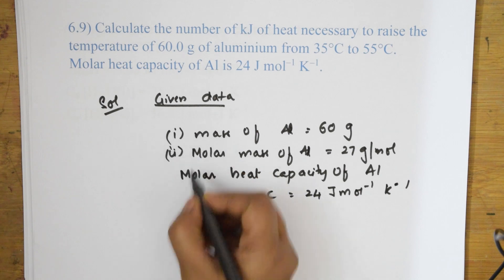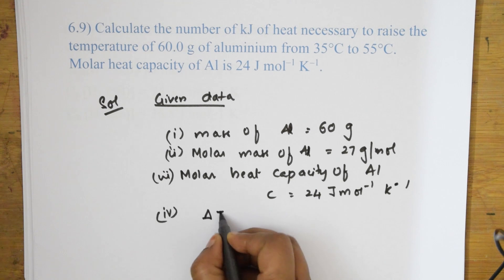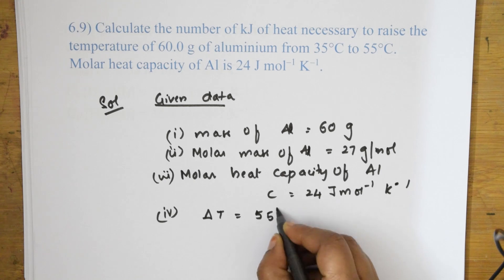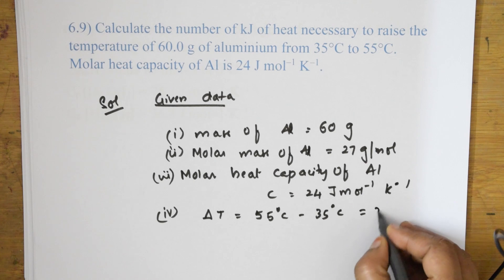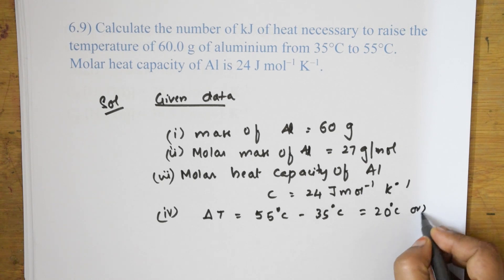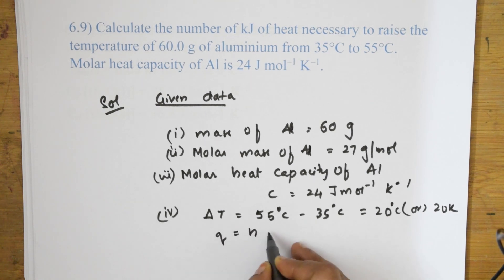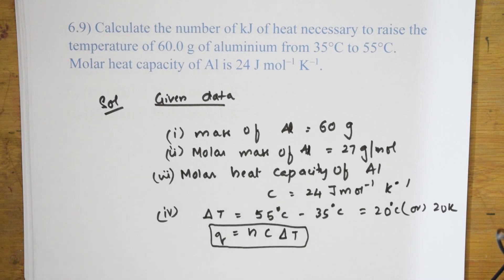ΔT = 55°C − 35°C = 20°C, or 20 K. The formula is q = nCΔT, which we've already studied. We need to find the quantity of heat.